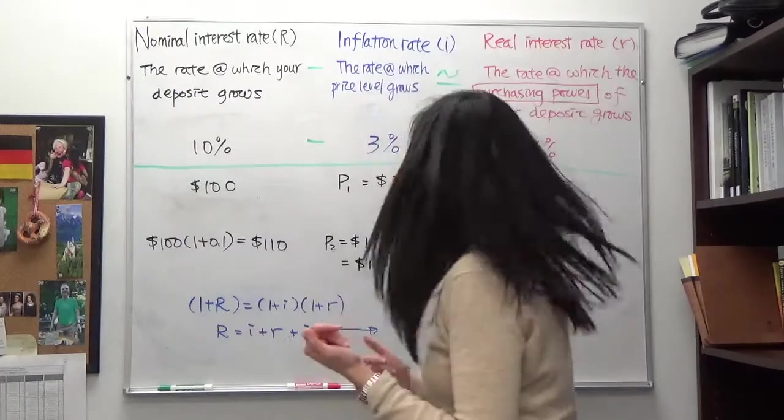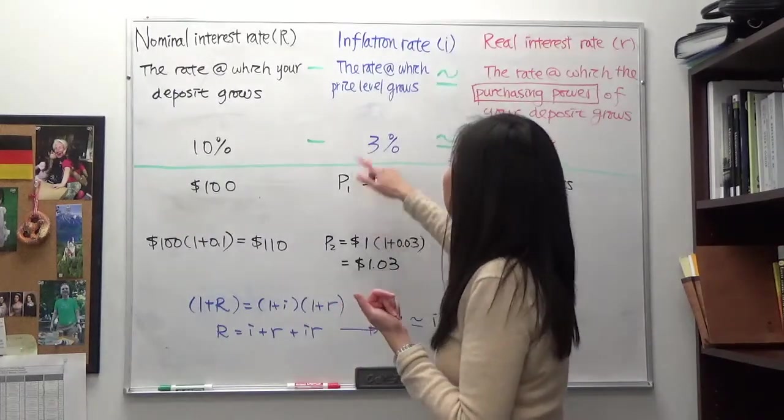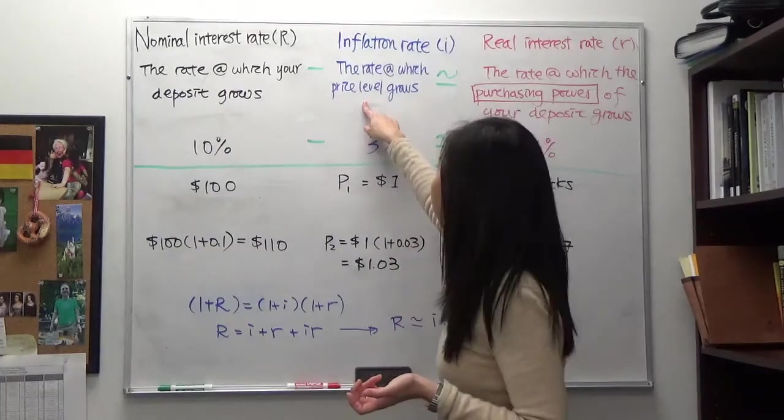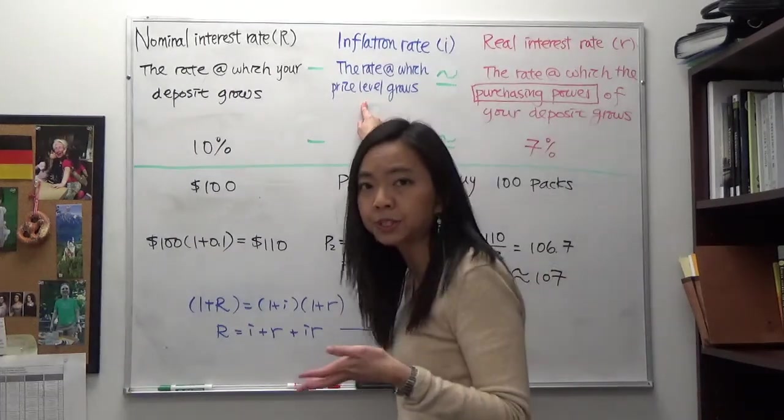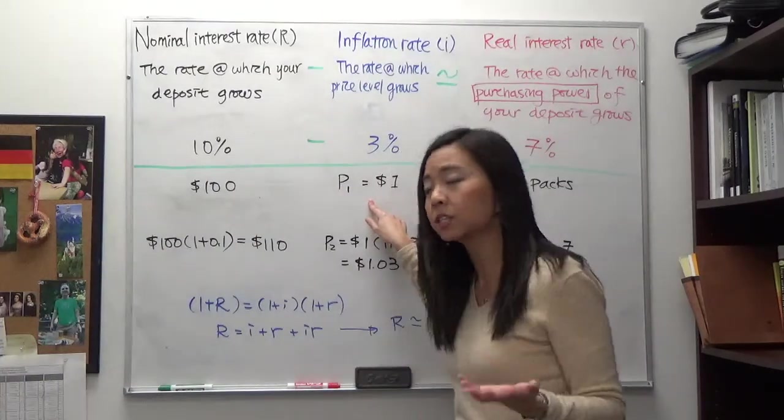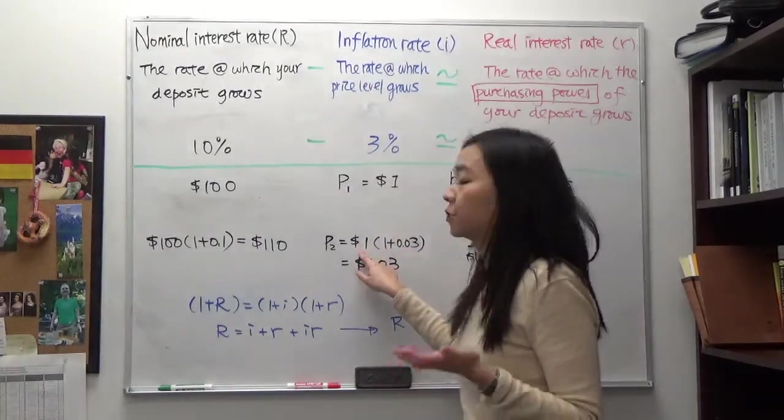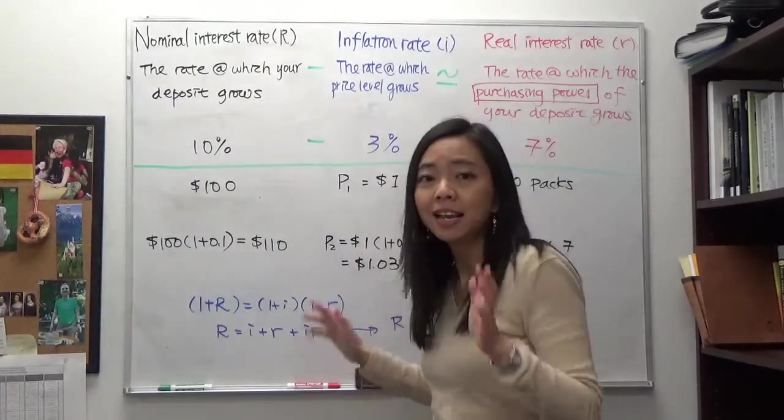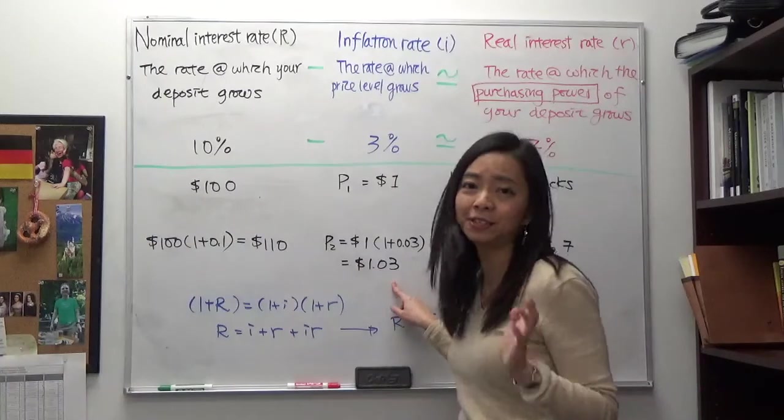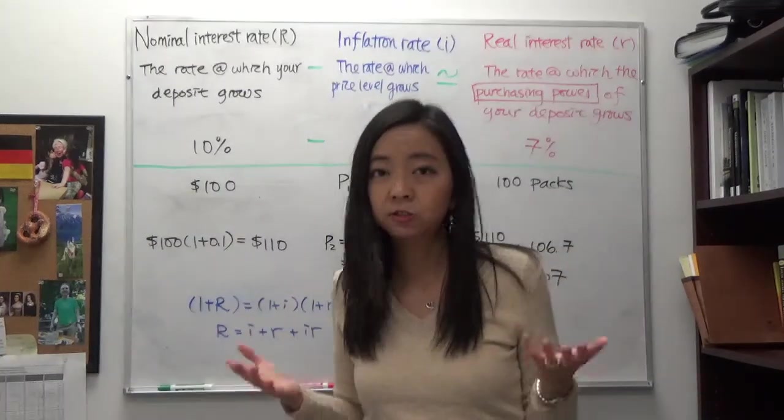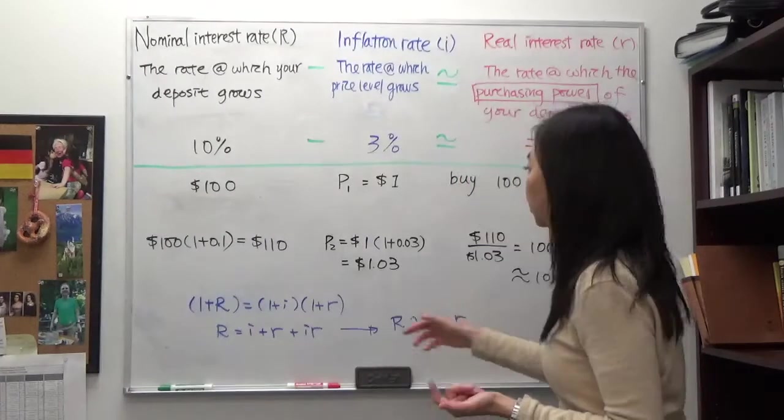And during this year the inflation rate say is three percent. Now inflation rate is the rate at which price level grows, so that means last year your price of chalks is a dollar and because inflation rate is three percent, now this year the price of chalk is approximately a dollar and three cents. So when you're calculating how many packs of chalks you can buy you will have to divide a hundred and ten...